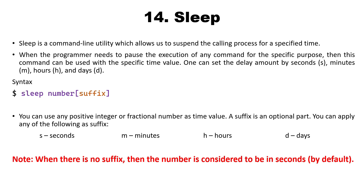We shall see how we can use this command within our bash script. The syntax is very simple — we just write sleep, then a space, then a number. For example, sleep 5 means the execution will be paused for 5 seconds unless we specify a suffix. Writing sleep 5m means the execution will stop for 5 minutes. If no suffix is provided, it is automatically considered to be seconds — that is the default.